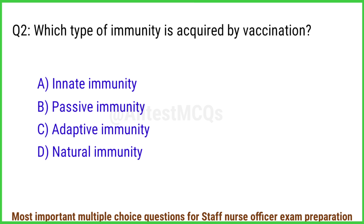Q2. Which type of immunity is acquired by vaccination? The right answer is option C: Adaptive immunity.